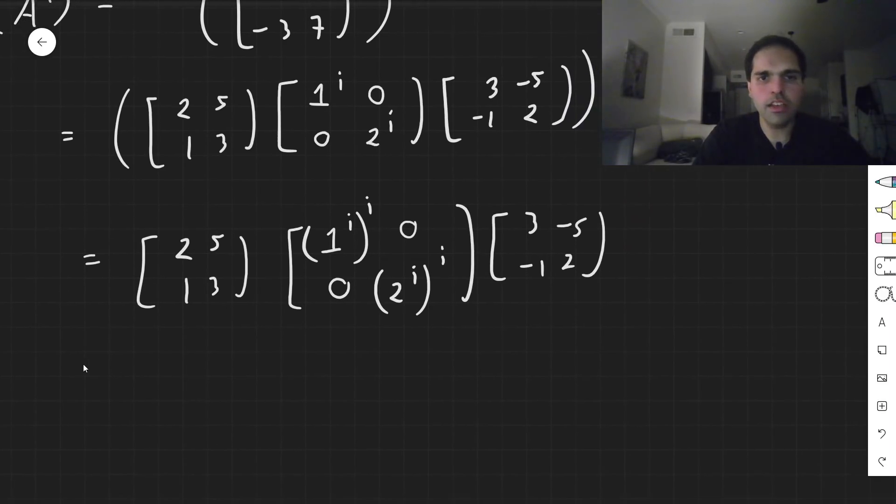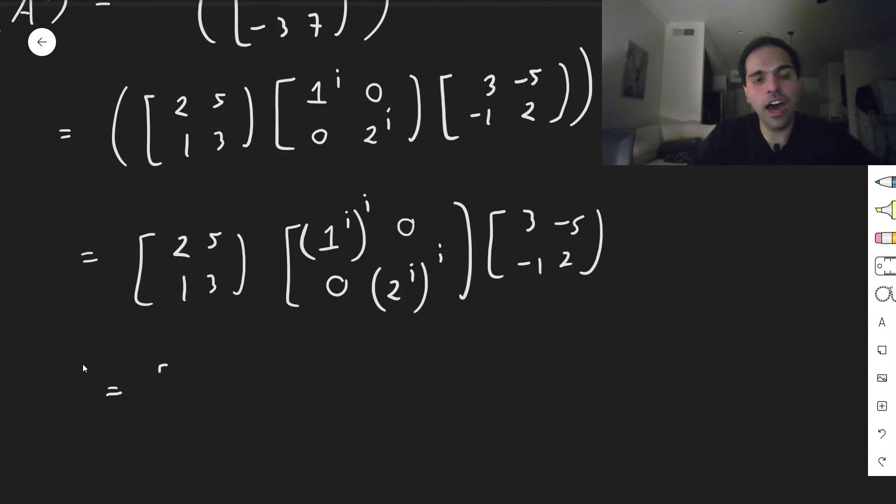And here's the thing, 1 to the i to the i, that is 1 to the minus 1. So 2, 5, 1, 3, 1 to the minus 1, which is 1, 0, 0, 2 to the minus 1, 3, minus 5, minus 1, 2.